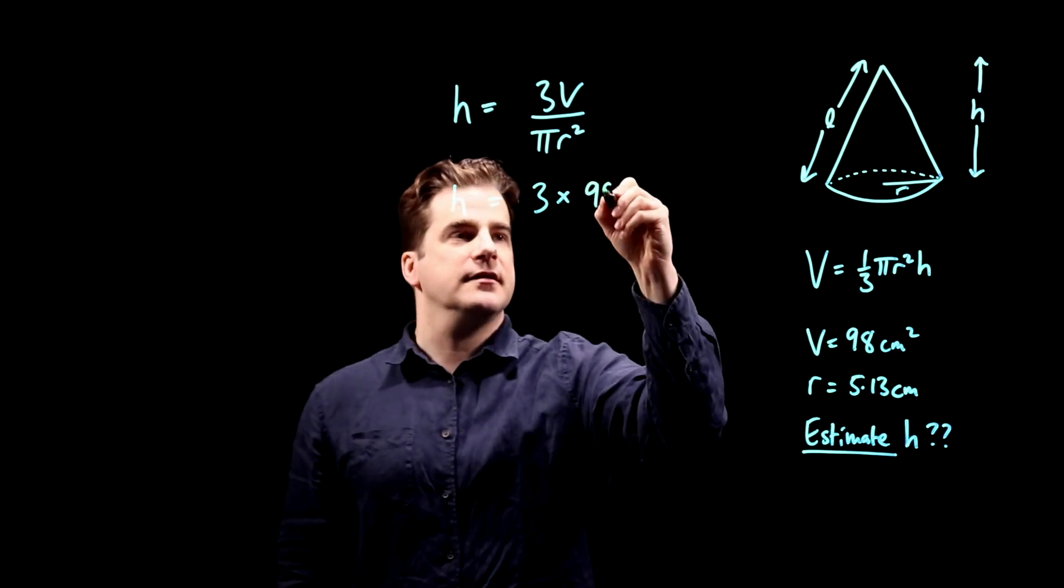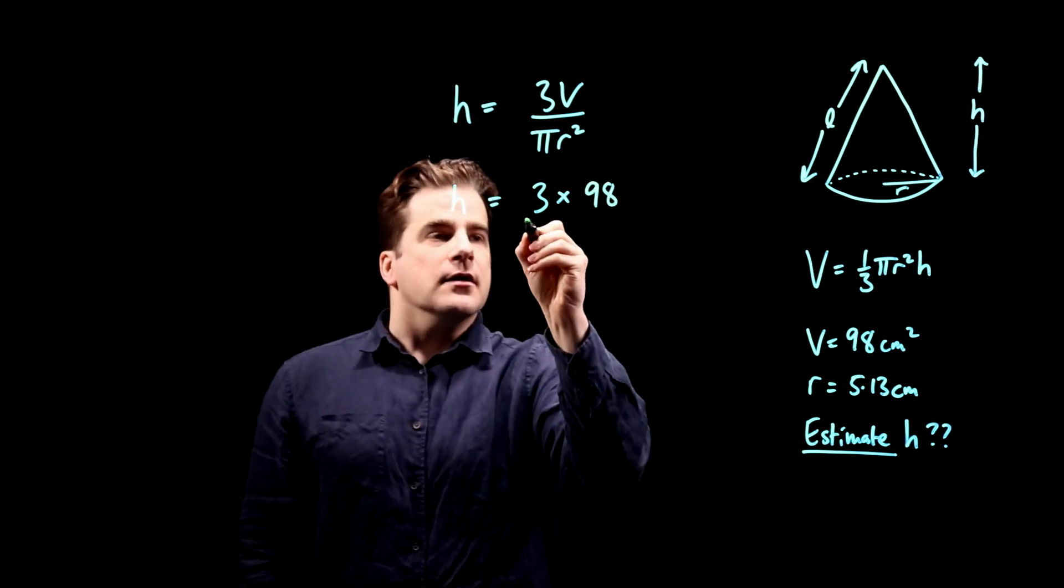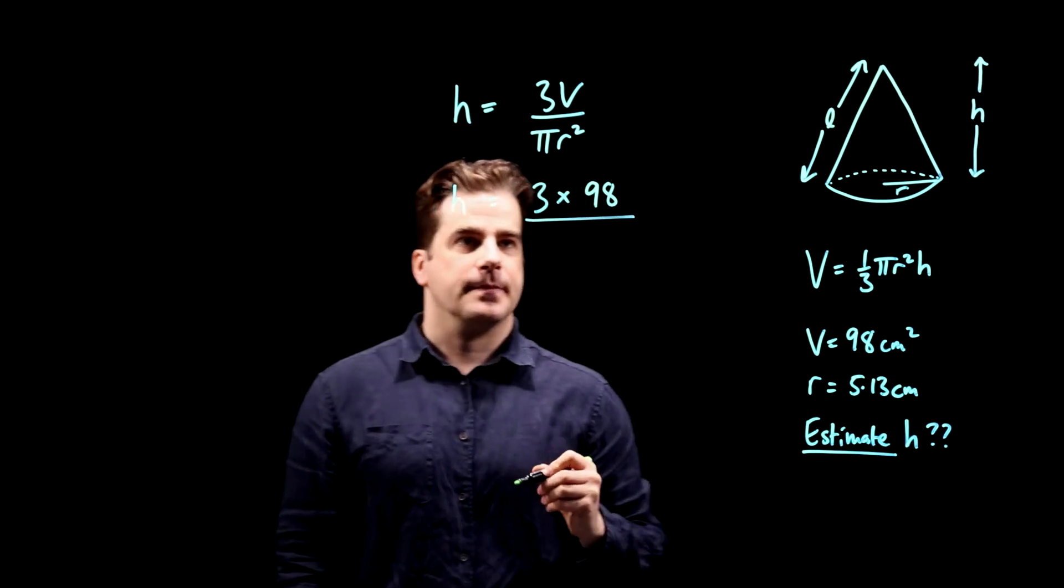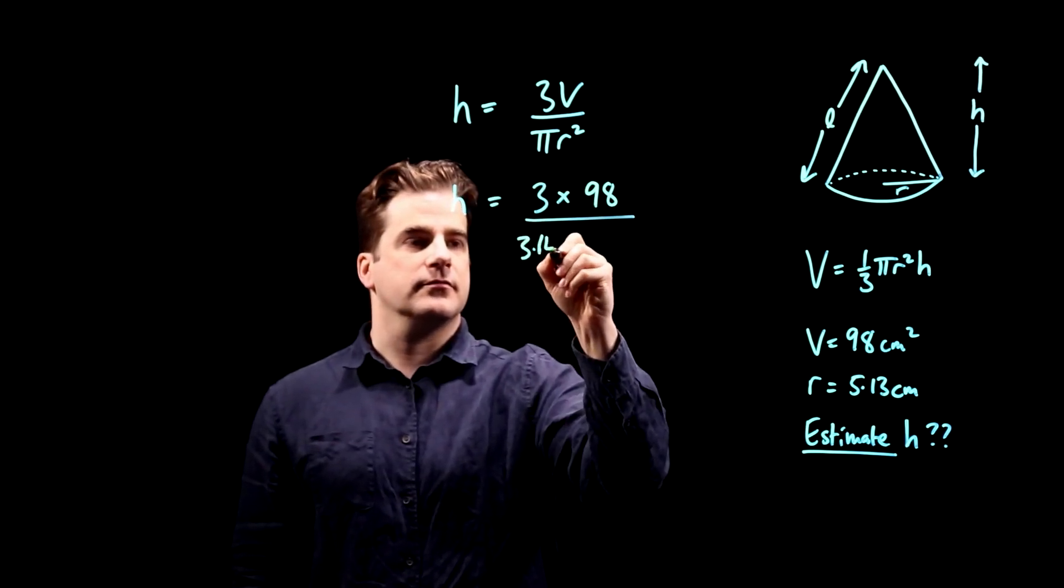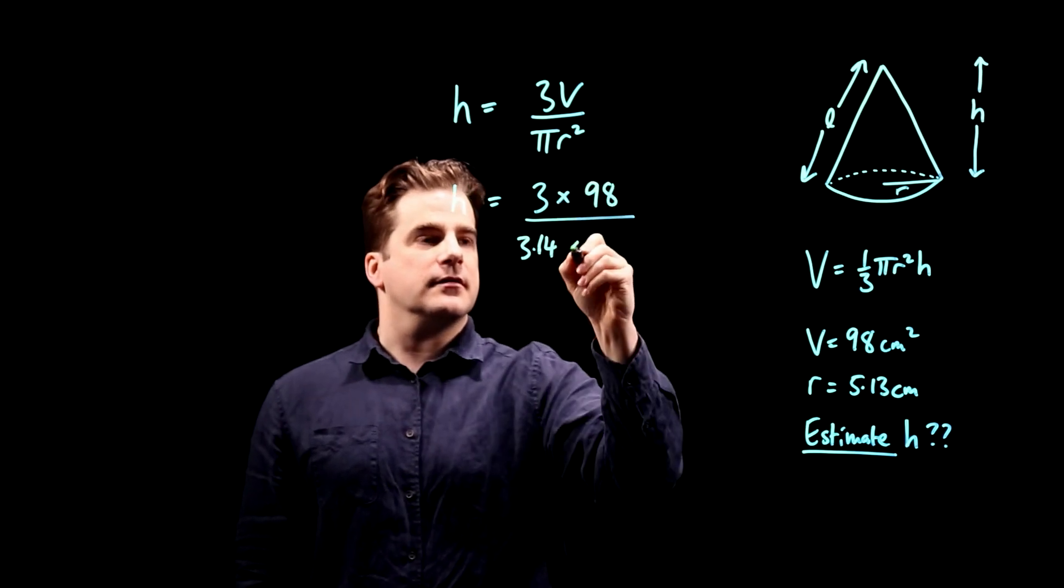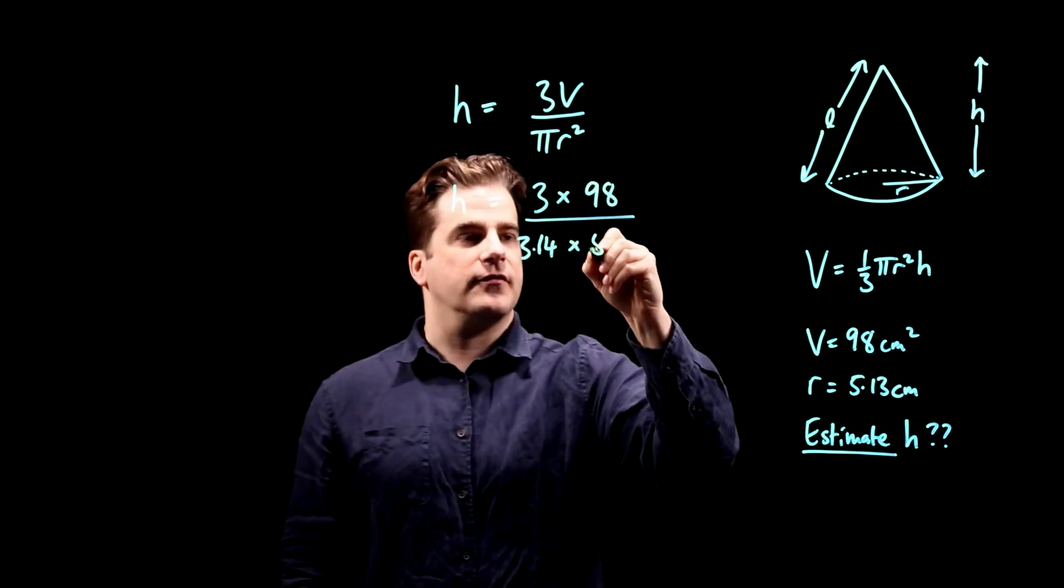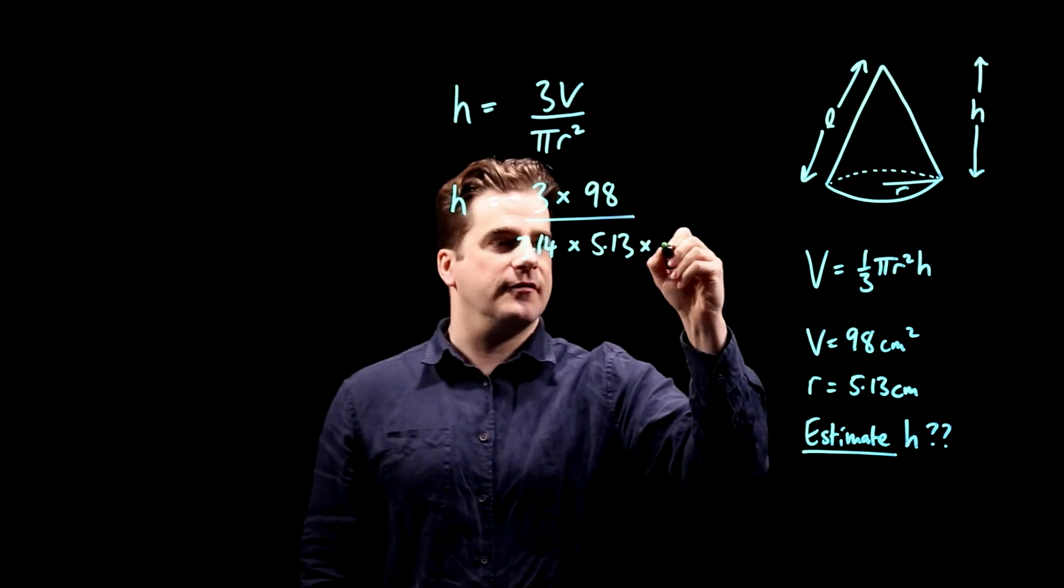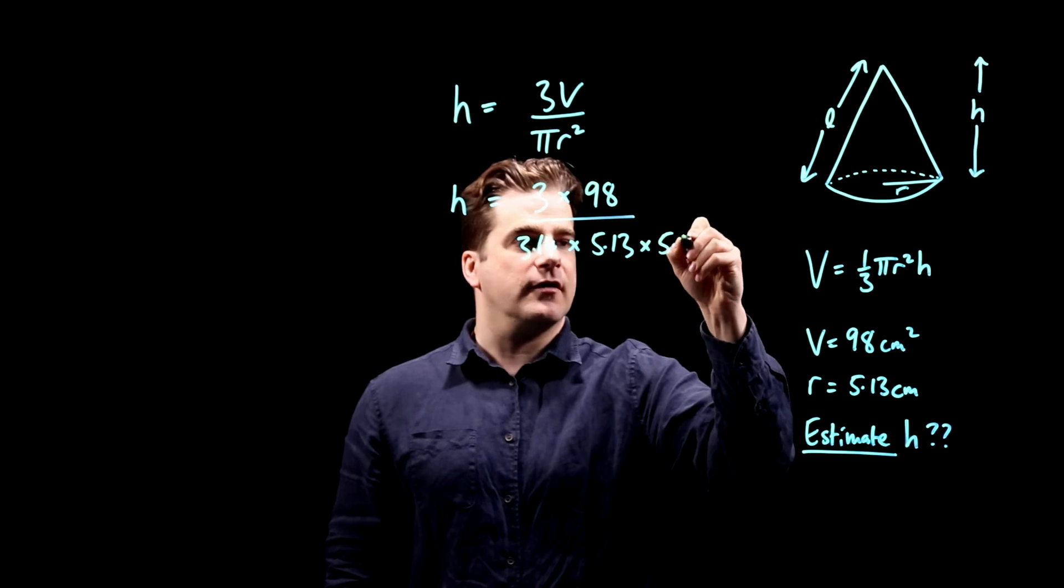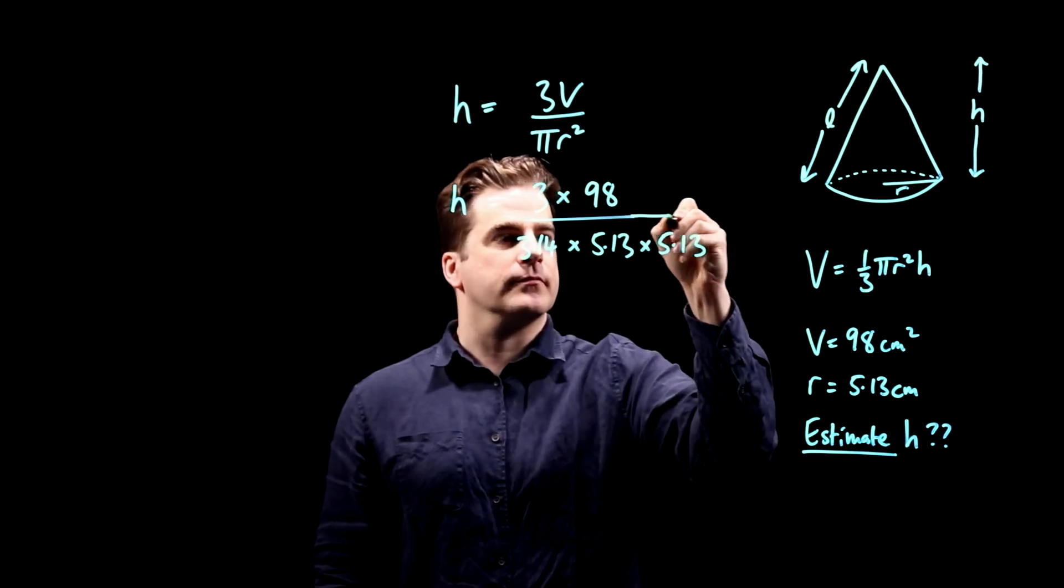So it's 3 times 98 over pi. Well, pi is 3.14, times r squared. r is 5.13, 5.13. And I'm not going to write it squared, I'm going to write it as 5.13 times 5.13.